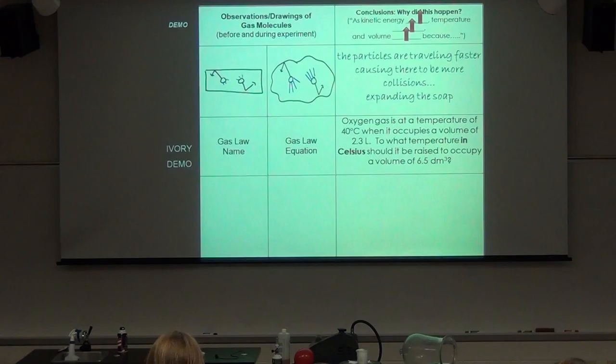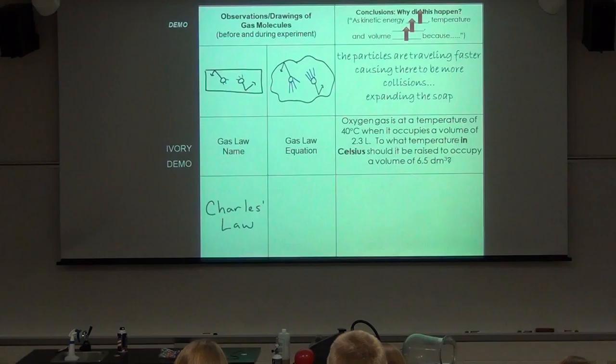In our bar of soap, we've got more than just two molecules. But we have modeled this with two molecules. They're moving just a little bit of wiggle initially at room temperature. Once we heat them up, they start popping around pretty good. A lot of collisions with one another. A lot of collisions with the surface of the soap. And it expands the bar of soap significantly. So the particles are traveling faster, causing more collisions and expanding the soap or causing a larger volume.